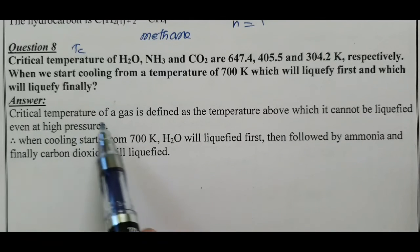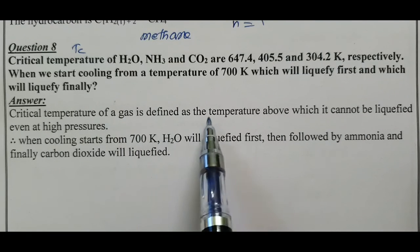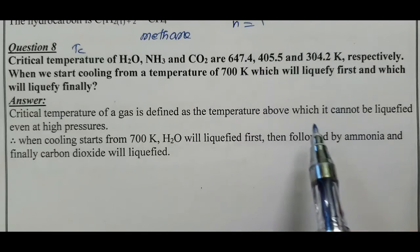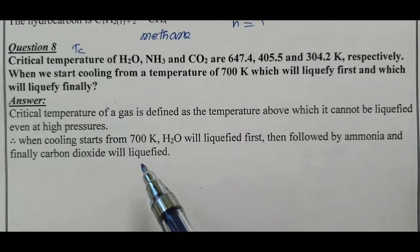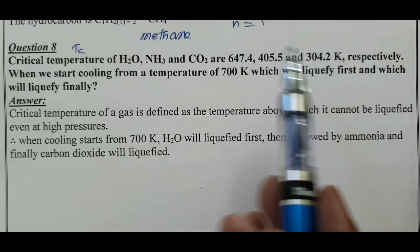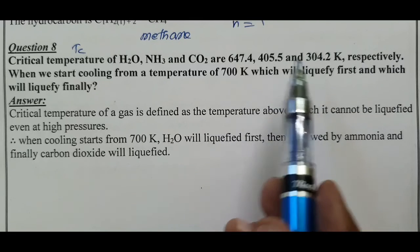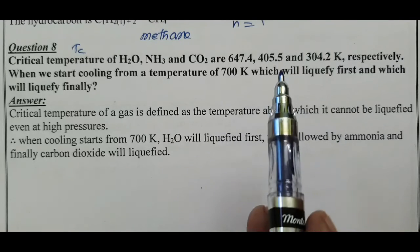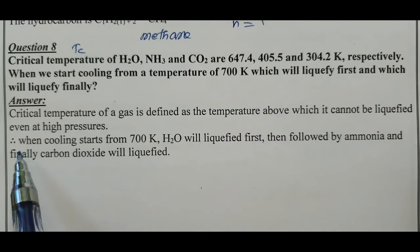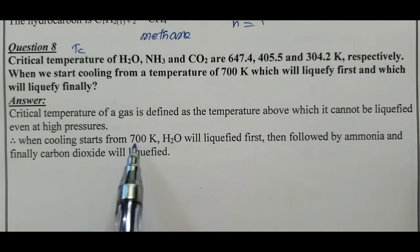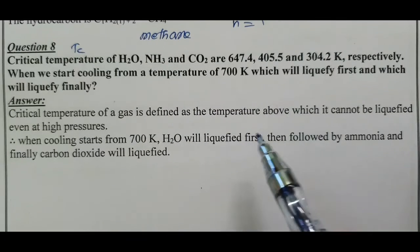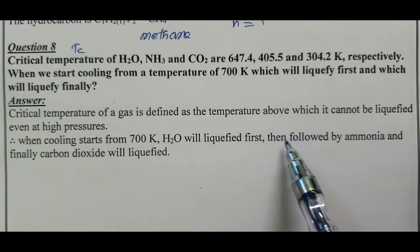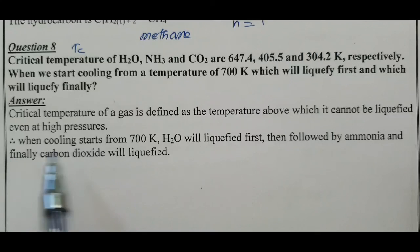Answer: Critical temperature is the temperature above which a gas cannot be liquefied even at high pressure. When cooling starts from 700 K, H2O will liquefy first, then ammonia, and finally carbon dioxide will liquefy last.